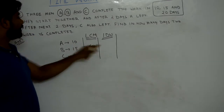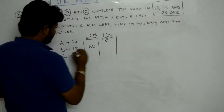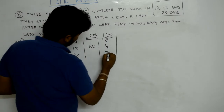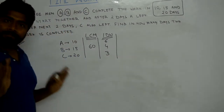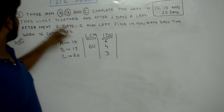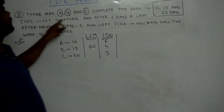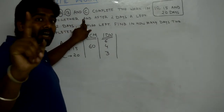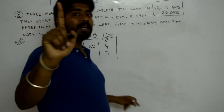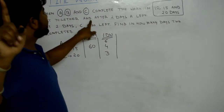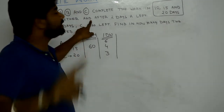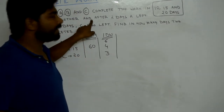Next, we find the one-day work of A, B and C separately. One-day work of A is 6 units, B is 4 units, and C is 3 units.